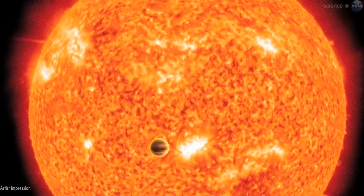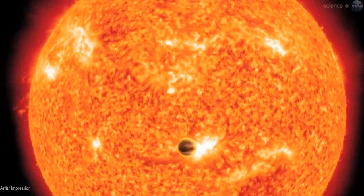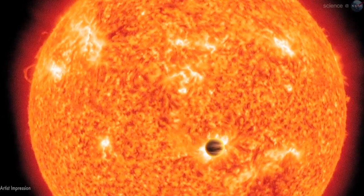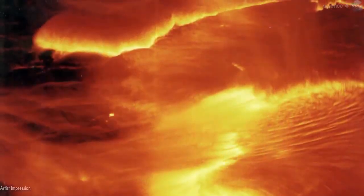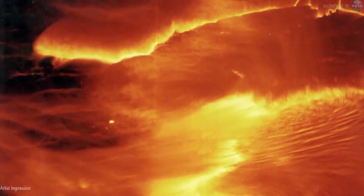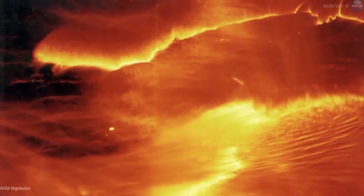Completing one orbit in only 18 hours, the alien planet is 26 times closer to its parent star than Mercury is to the Sun. If Earth were in the same position, the soil beneath our feet would heat up to about 3200 degrees Fahrenheit.